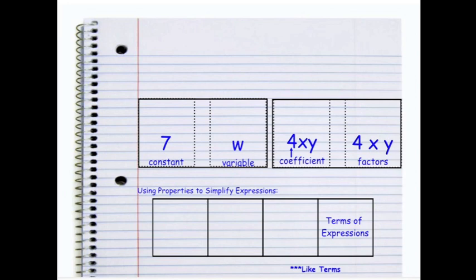In your notebook, you should have the two little foldable templates for constant and variable and coefficient and factors. In the middle of the constant variable, you're going to insert a plus sign because 7 plus w is a constant plus a variable. Whereas in the middle of the coefficient and the factors, you're going to insert an equal sign because 4xy is the same as 4 times x times y.